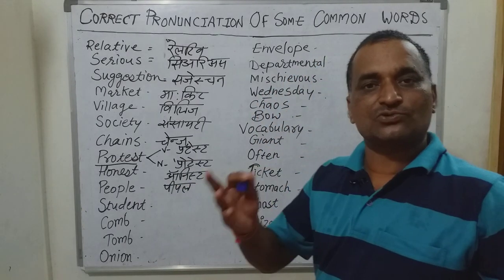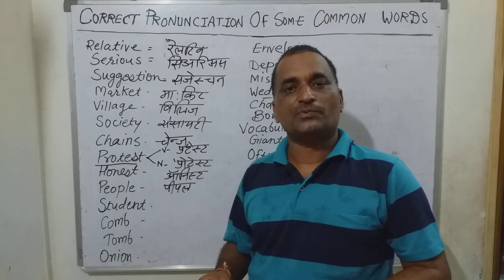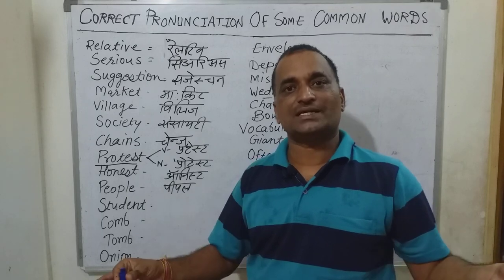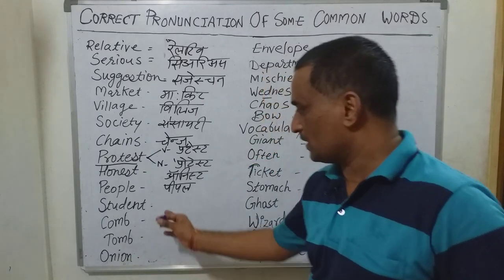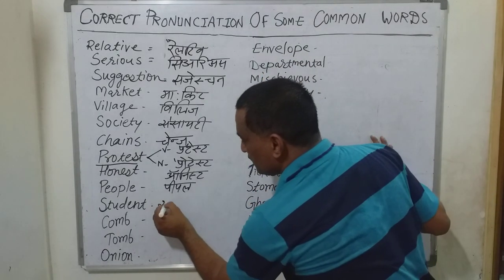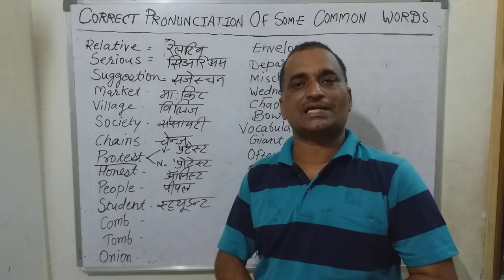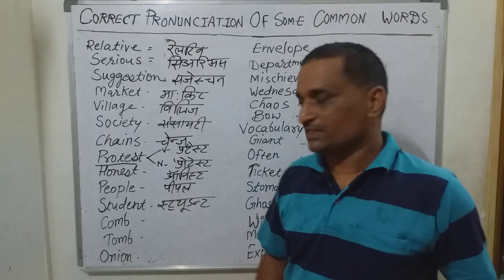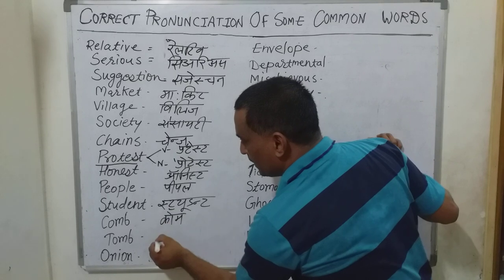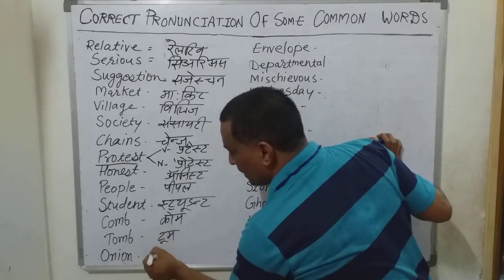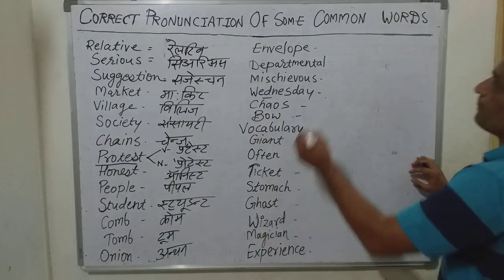I remember a student speaking the word 'matter' — he kept calling it 'matter,' which is a very terrible situation. Now, the next word is 'student' — not 'student,' as 'student' is absolutely incorrect pronunciation. The correct form is 'student.' The next words are: 'comb' — meaning a comb — and 'tomb,' meaning a tomb or mausoleum. Then 'onion,' meaning onion.